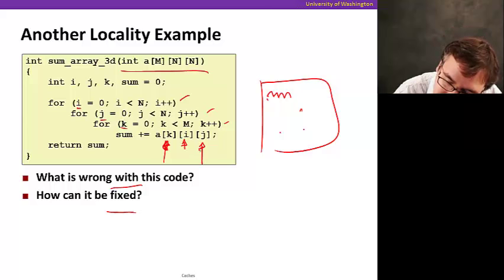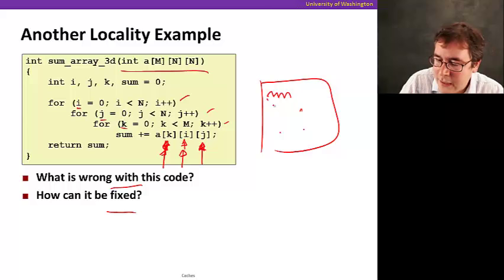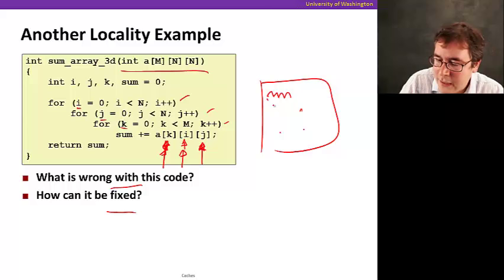So what's wrong with this code is that we're accessing it out of order. So how can we fix it? Well, we should first loop through the last dimension, then the middle dimension, then the first dimension because we access data in a way that follows how it's laid out in memory. See you soon.